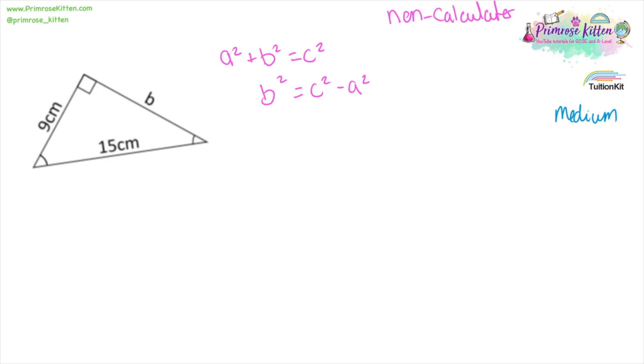Another non-calculator one here. Here is C, the hypotenuse, and A. In this example, I've rearranged the equation first for you. B squared equals 15 squared minus 9 squared. I would really like you to know that 15 squared is 225 minus 9 squared, 81. It is just going to make your life easier if you know these things by heart. 225 minus 81 is 144. Square root of 144 is 12.